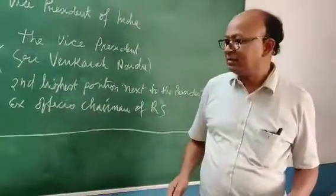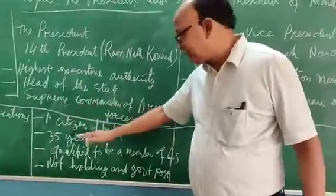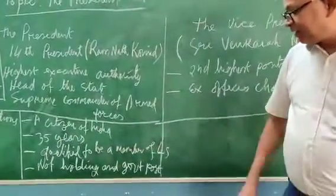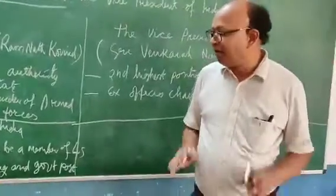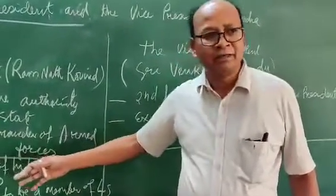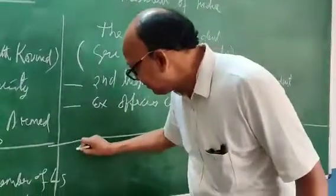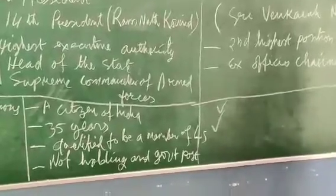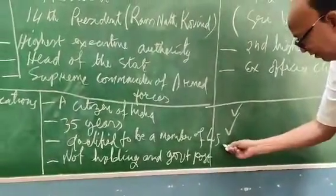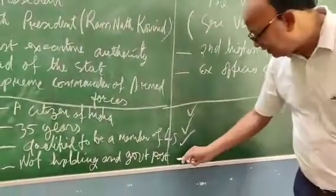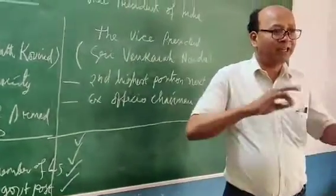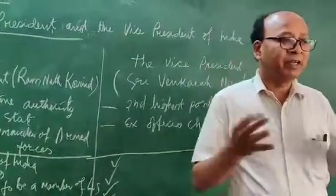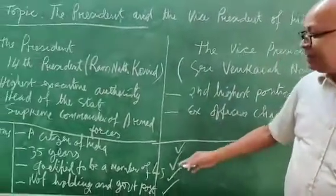His qualifications — in the case of the President of India, a person should be a citizen of India, he should be at least 35 years old, he should be qualified to be a member of Lok Sabha, and he should not be holding any government post. The same qualifications are required for becoming the Vice President of India also. So the same qualifications apply to both the President and the Vice President of India.